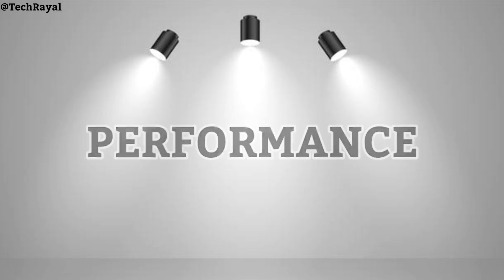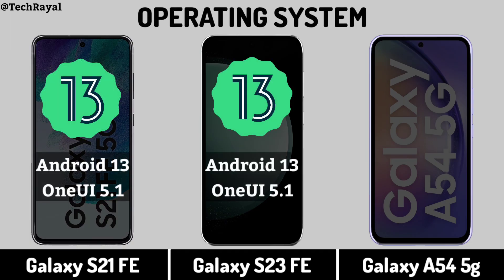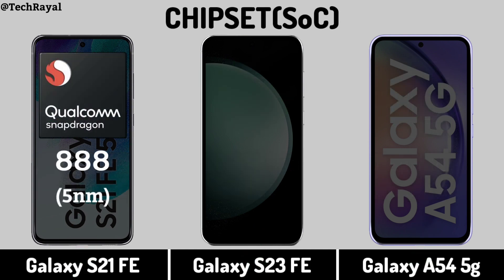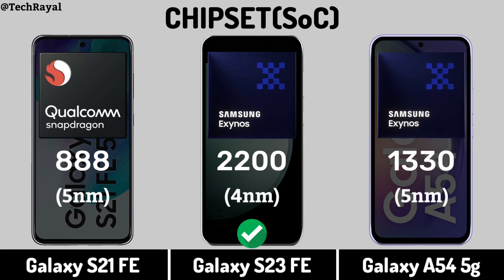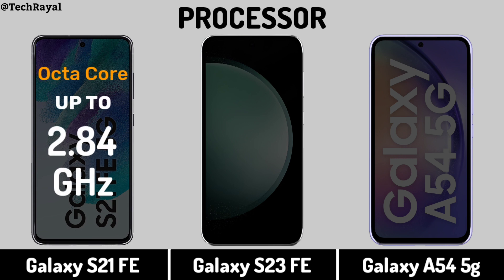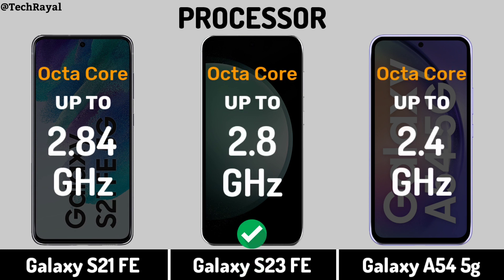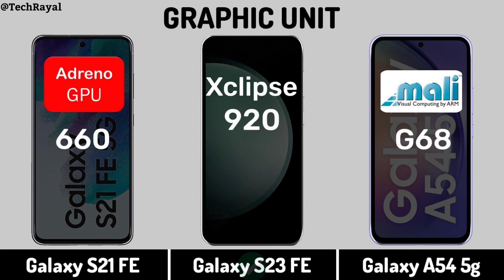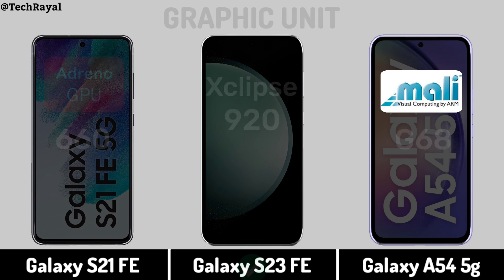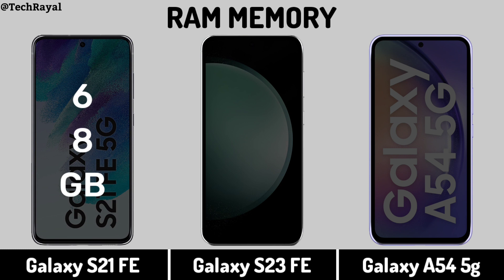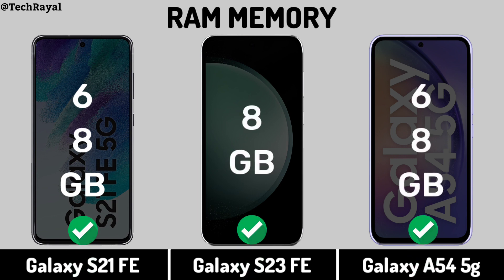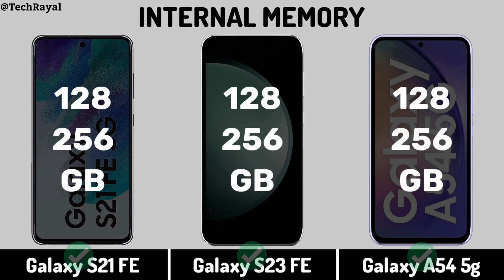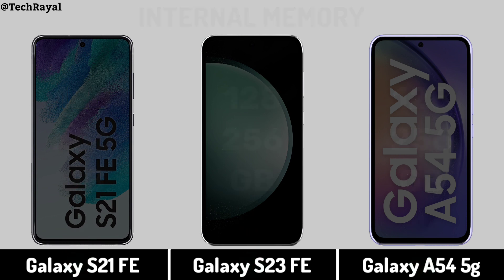Now for Performance: Operating System. Chipset. Processor. Graphic Unit. Now for Storage: RAM Memory. Internal Memory, Memory Card support.